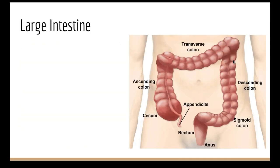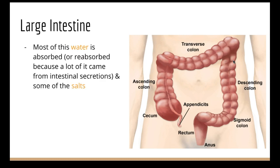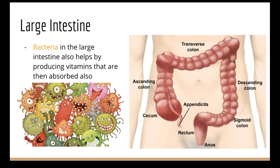Moving into the large intestine: all nutrients have already been absorbed in the small intestine, and no more breakdown is happening. What remains is indigestible matter — things like plant fiber — plus some water and salts. The large intestine absorbs that water; without doing so we would end up with diarrhea. It also absorbs some salts needed for body processes.